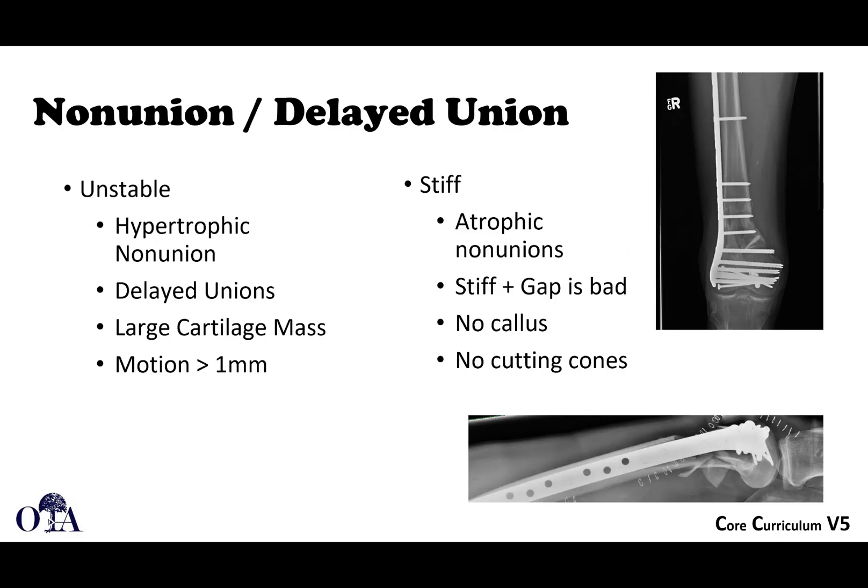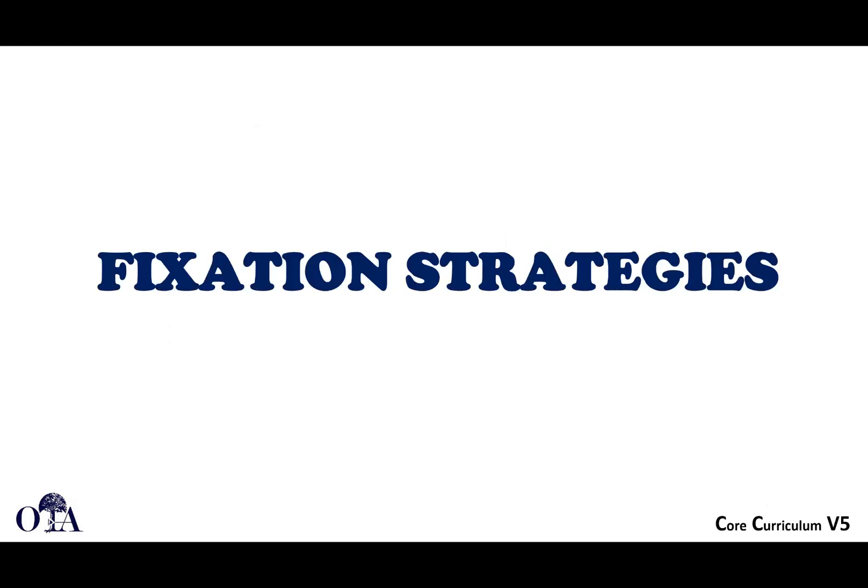Non-unions and delayed unions are covered in a different lecture, but sometimes a fracture won't heal because there's too much motion or instability. This can lead to a hypertrophic non-union where the body is making bone but motion hasn't been limited enough for bone to bridge the fracture gap. Too little motion can also cause a non-union — a very rigid gap with no callus and no primary healing leads to an atrophic non-union. Striking this balance is the goal. In the next video, we'll pick up with fixation strategies.